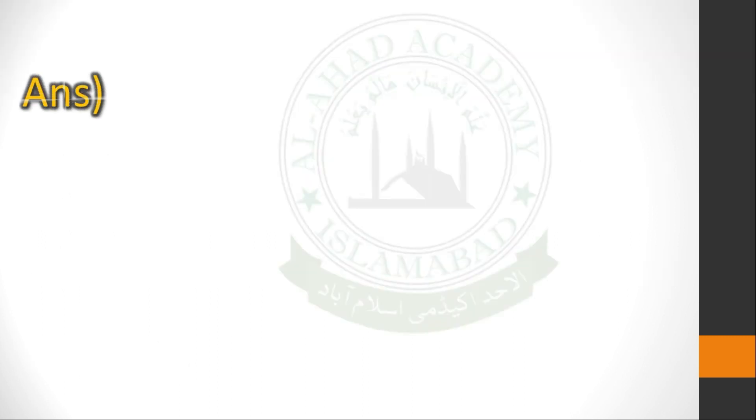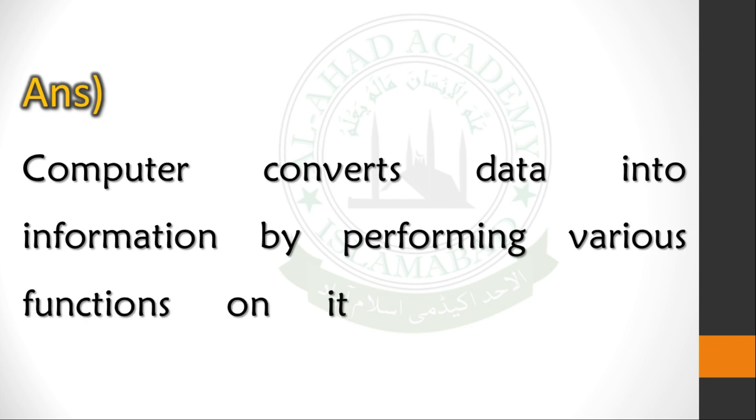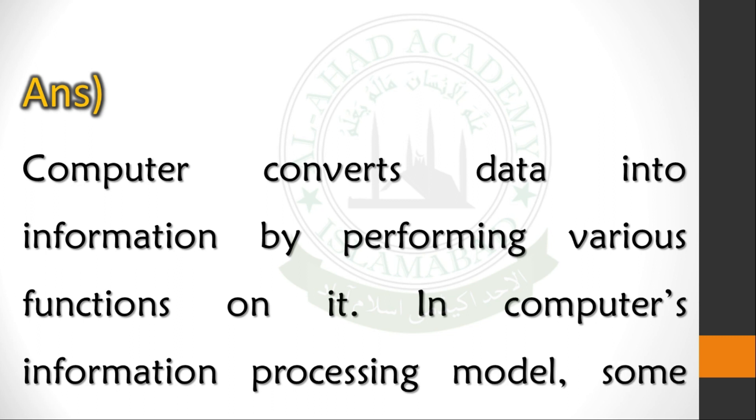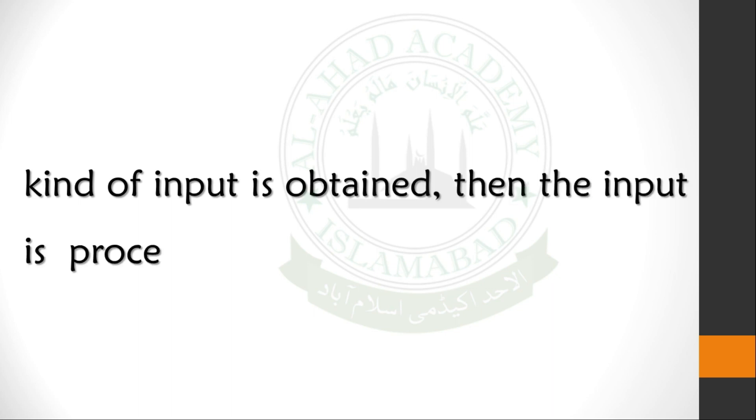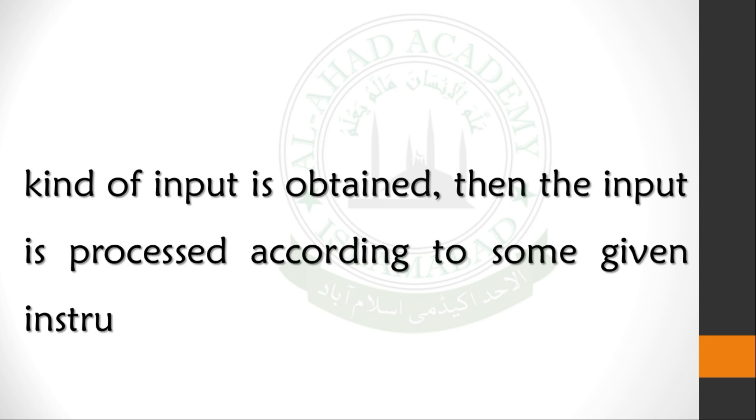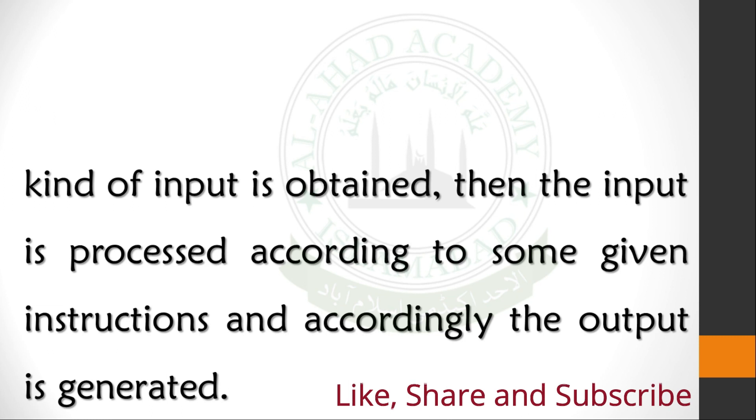Answer: Computer converts data into information by performing various functions on it. In computer's Information Processing Model, some kind of input is obtained, then the input is processed according to some given instructions and accordingly the output is generated.